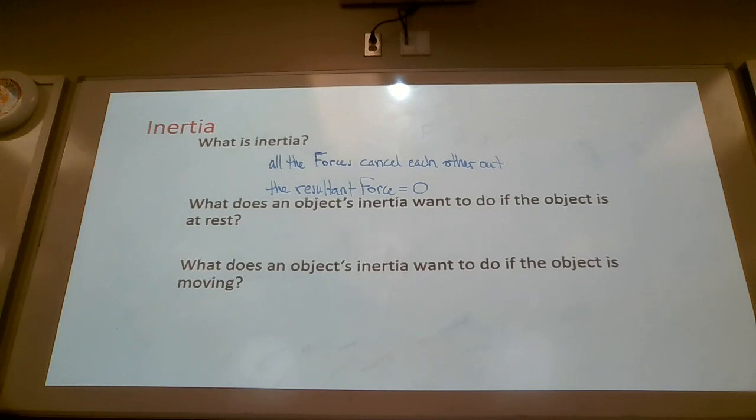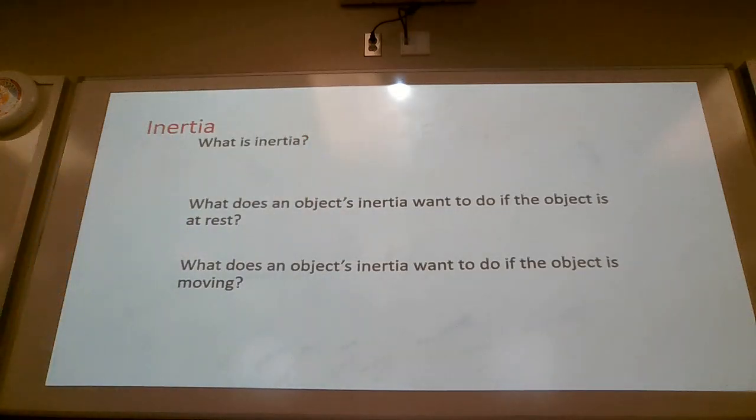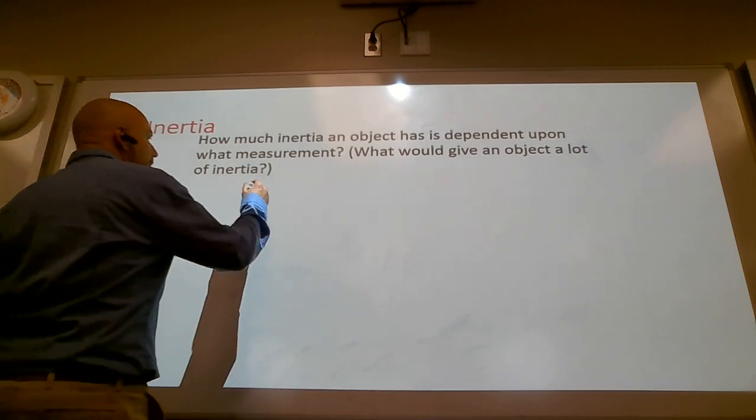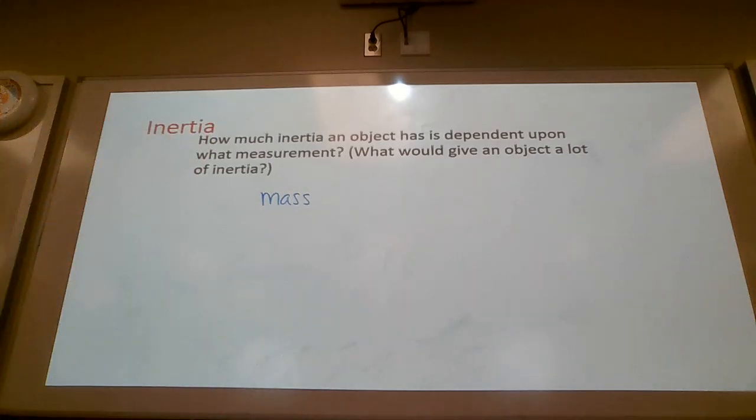Inertia. Tell your neighbor what inertia is and what does it want to do if the object is at rest and what does it want to do if the object is moving. At rest it wants to stay at rest and if the object is moving it wants to continue moving at constant speed and a straight line path. All right. How much inertia does an object have is solely dependent upon an object's mass. Solely determined by the object's mass.